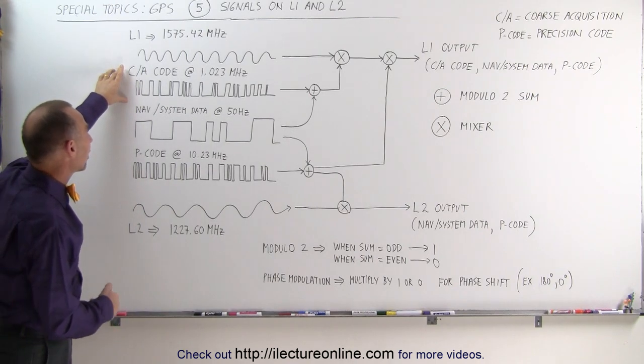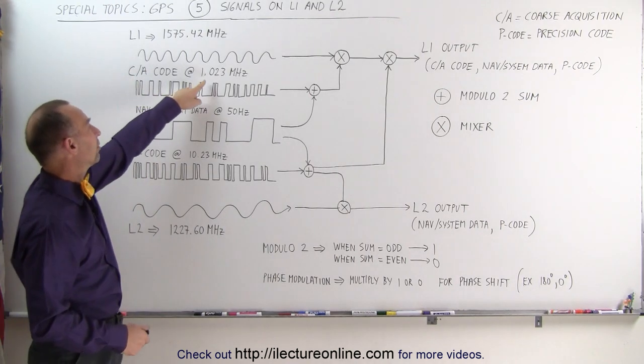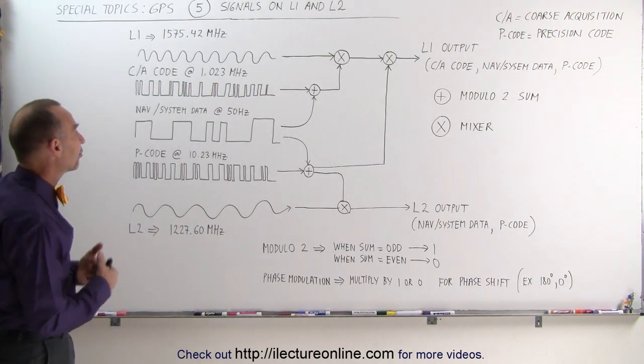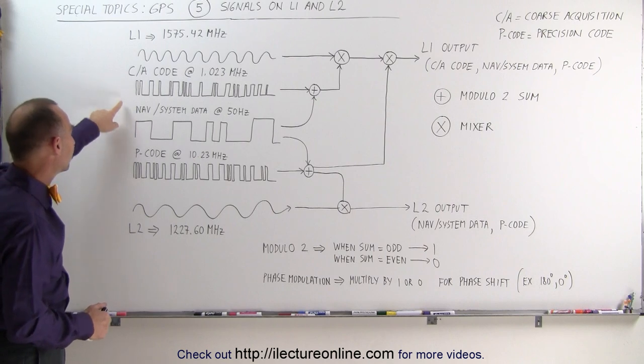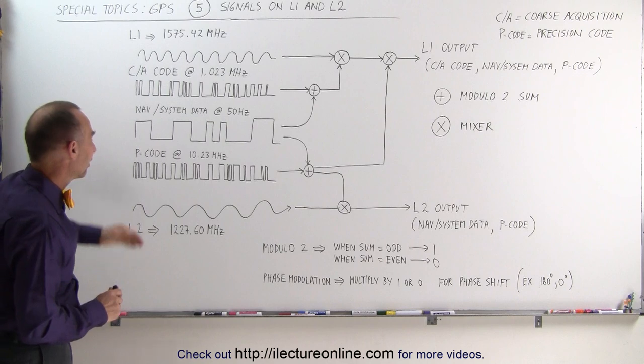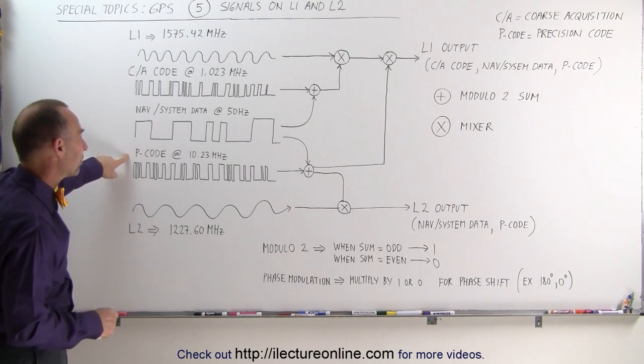So the CA code, or the Coarse Acquisition code, which has a frequency of 1.023 MHz, which is 1 tenth that base frequency provided by the atomic clocks, and the P code is 10.23 MHz, which is the exact frequency of that base frequency provided by the atomic clocks.